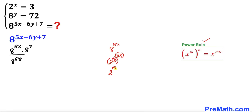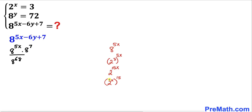So this becomes 2^(3 × 5x) = 2^(15x). Now we can rewrite this as (2^x)^15. We know that 2^x = 3, so we replace 2^x with 3, giving us 3^15.